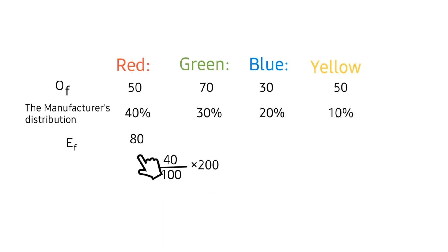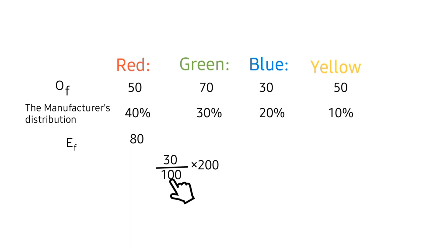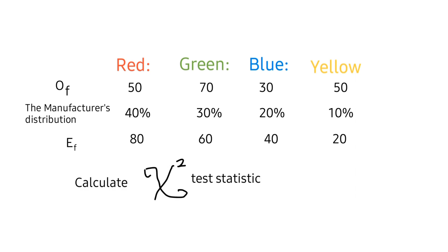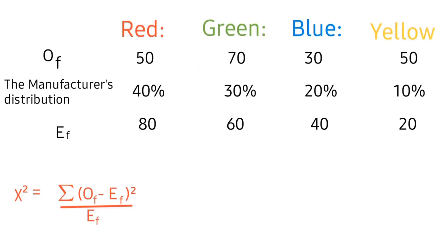The expected frequency for green is 30 divided by 100 times 200, which gives 60. The expected frequency for blue is 20 divided by 100 times 200, which gives 40. The expected frequency for yellow is 10 divided by 100 times 200, which gives 20.